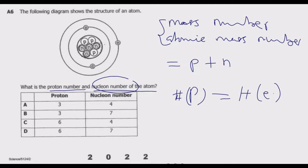P is the number of protons. So we count P1, P2, P3 — that gives us 3 protons. You also notice electrons 1, 2, 3 — they are also equal to 3. So this atom is neutral, because protons carry positive charge and electrons carry negative charge.